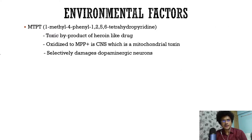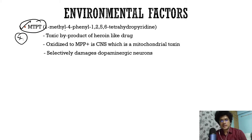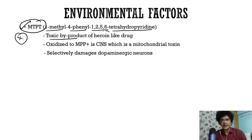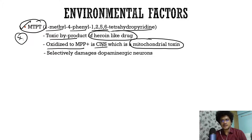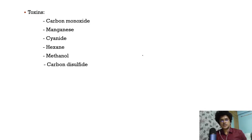Coming to the environmental factors, an important one for the exam is MPTP — 1-methyl-4-phenyl-1,2,5,6-tetrahydropyridine. It's a toxic byproduct of a heroin-like drug and is a mitochondrial toxin. It gets oxidized to MPP+ in the central nervous system and selectively damages dopaminergic neurons. The other toxins to remember are carbon monoxide and manganese.